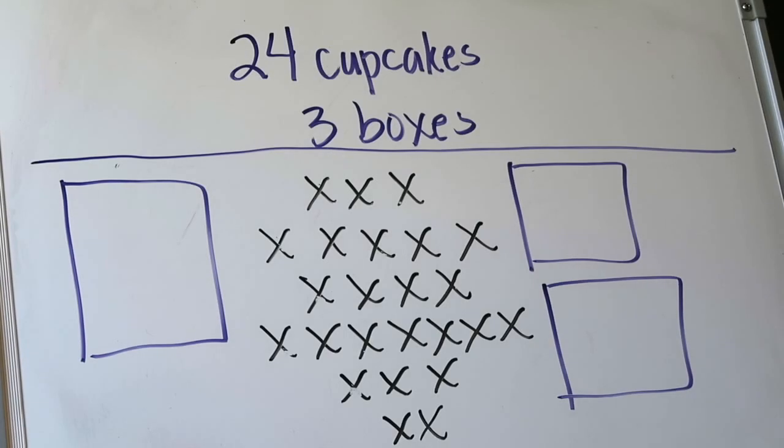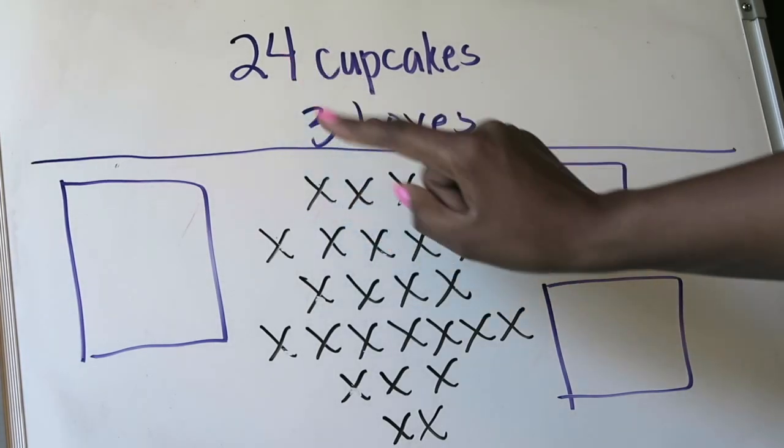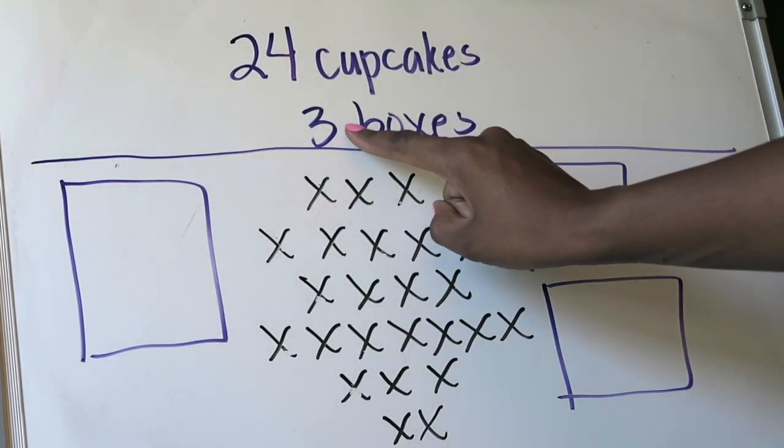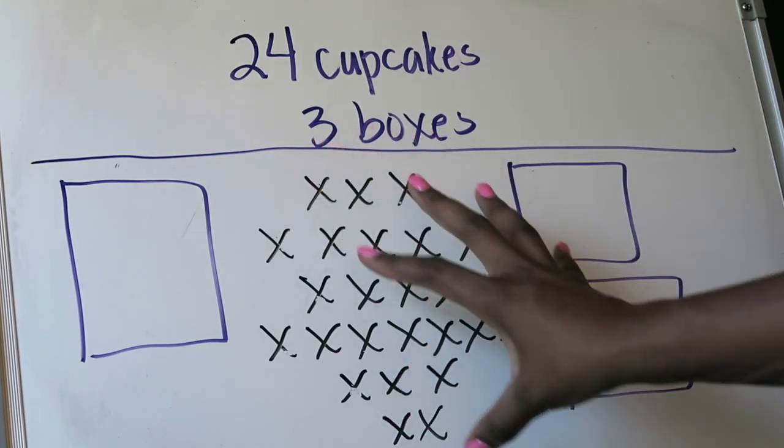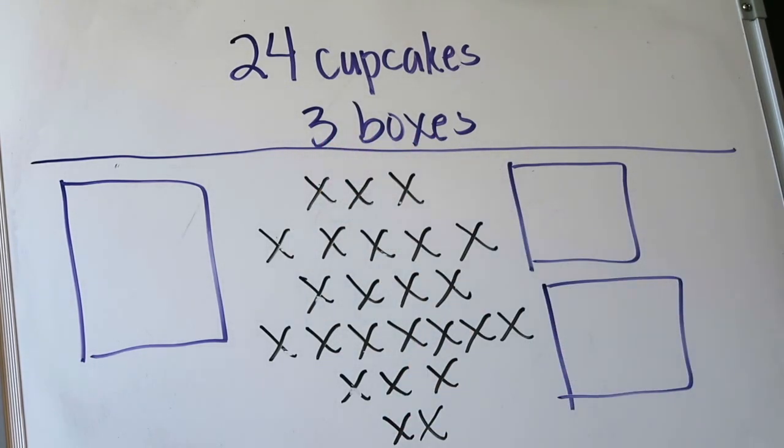Here is our first example. In our first example we are going to pretend that we are a baker, that we have a total of 24 cupcakes and we want all of those cupcakes to equally fit into three boxes. But given that I don't know what that means in terms of how many cupcakes do I need to put in each of those boxes. So the first thing that you're going to do in this type of problem is you're going to draw out your counters to represent your cupcakes. So these 24 x's here represent my 24 cupcakes.